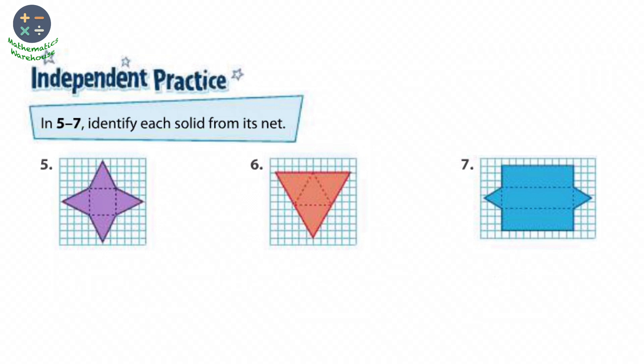In independent practice, identify each solid from its net. Number five, we just said the same. Here we have one base in square shape, so we have a pyramid, not a prism. And therefore we have a square shape, so we have a square pyramid.